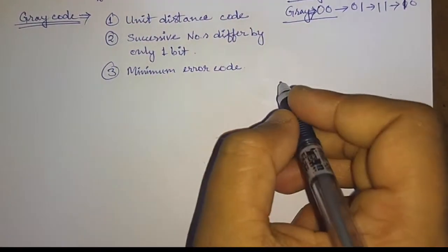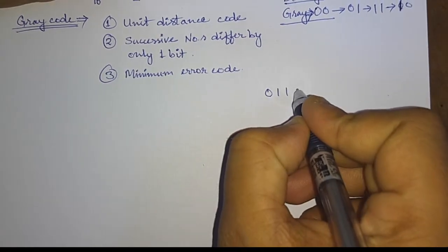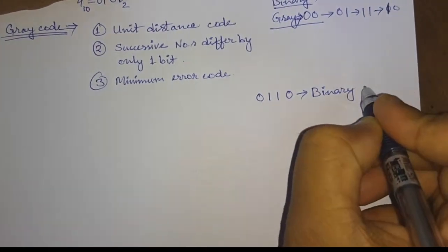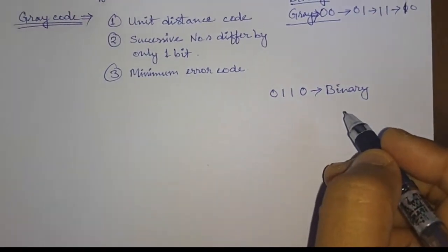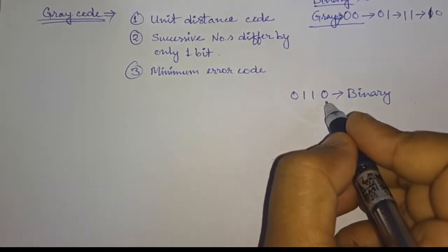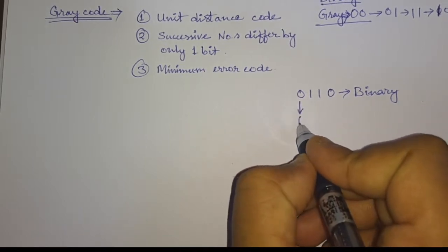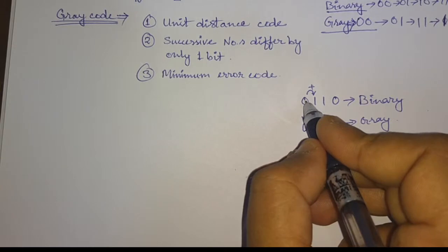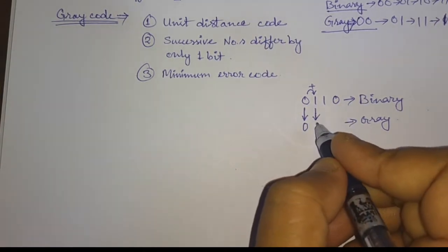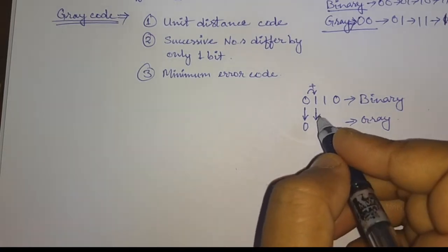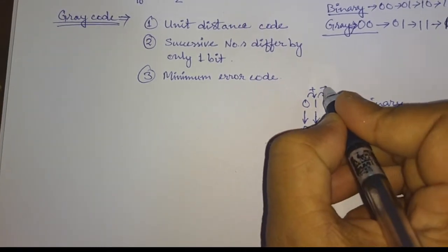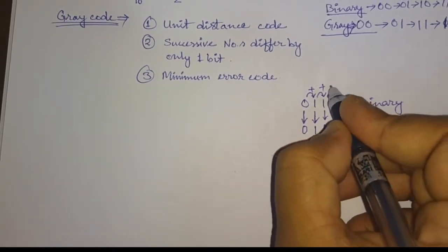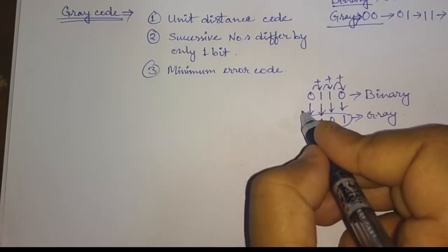Now we will see how to find the gray code from the binary number. Let us take an example. Suppose we have a binary number 0110. This is the most significant bit and this is the least significant bit. First, the MSB is written as it is: zero. Then we add this to the second number: zero plus one is one. Then one plus one is zero. Then one plus zero is one. So the gray code of this binary number is 0101.